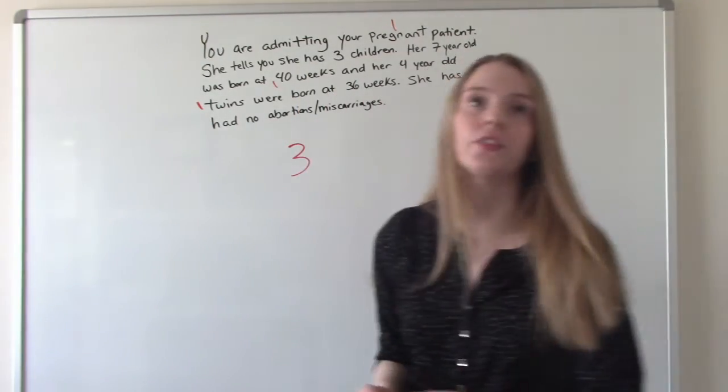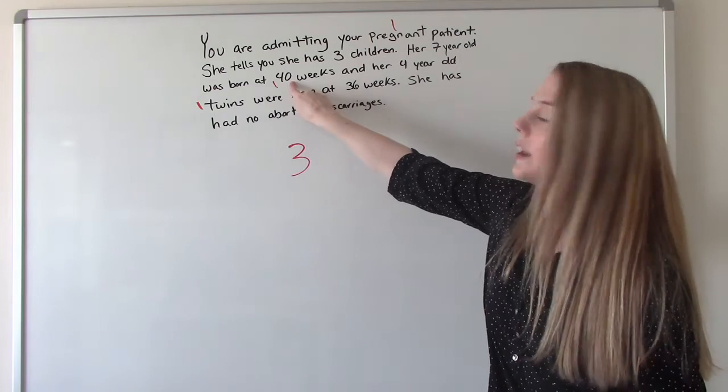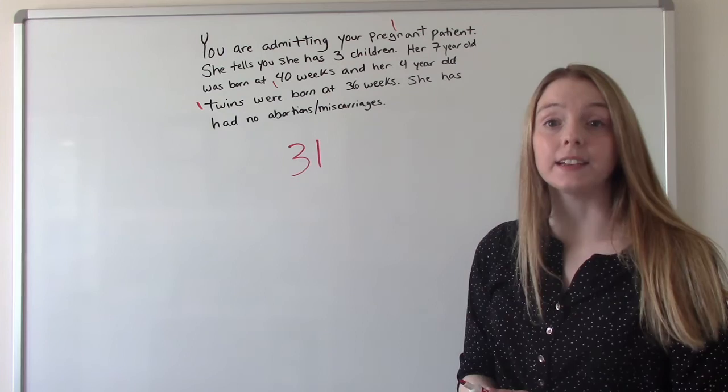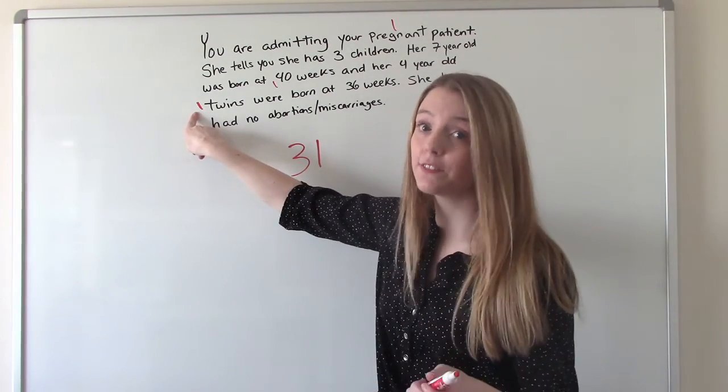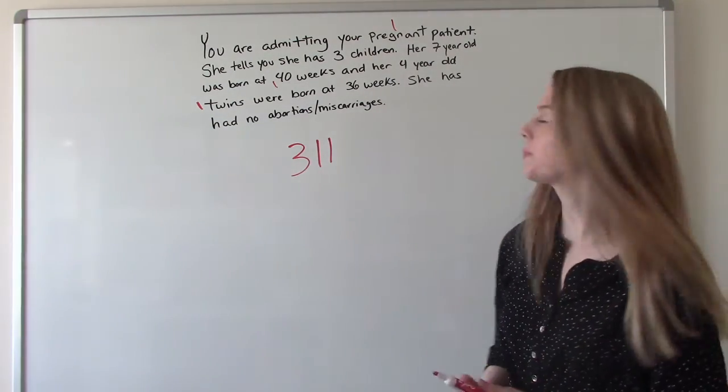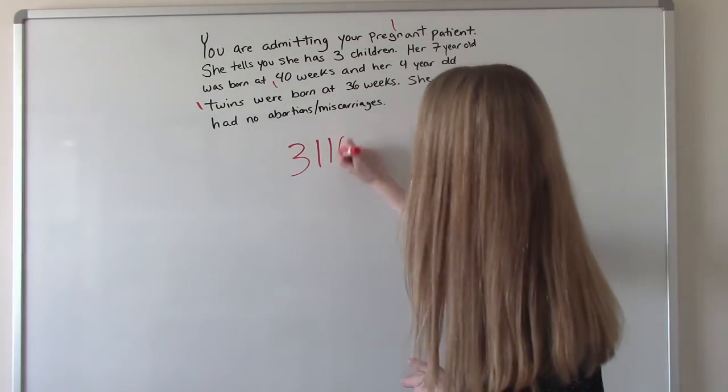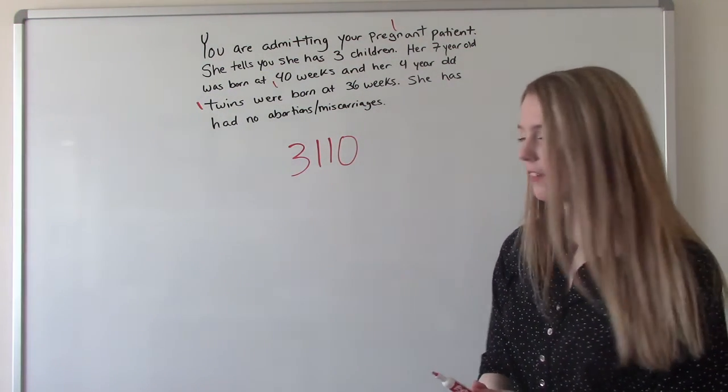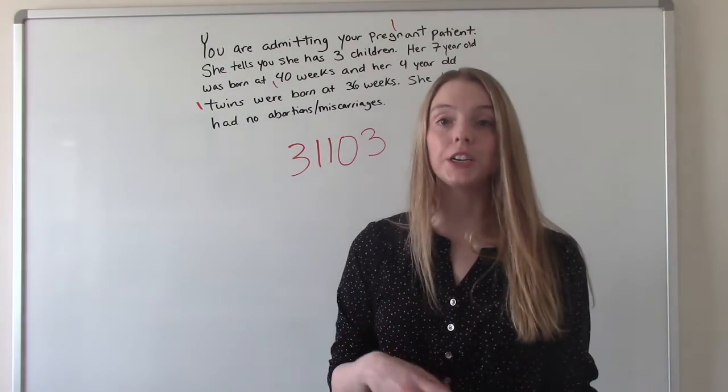So our gravida of three. How many T's? How many term deliveries? Just the one, because she's got the 40-weeker. How many P's? How many preterm deliveries? Just one, because remember, it's the number of deliveries, not the number of babies. So we're one again. And then abortions? She's had zero, none. And then how many L, how many living children does she have? She has three. So what about her GP? So our G stays the same. It's three.